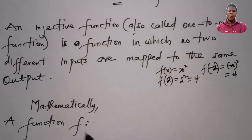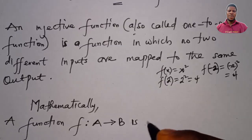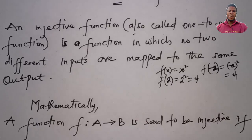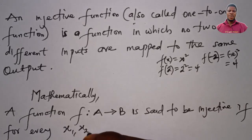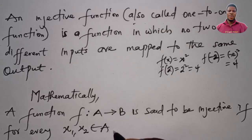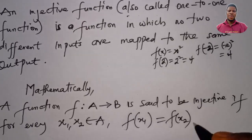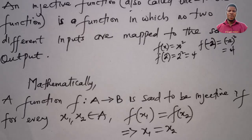Mathematically, a function f from domain A to codomain B is said to be injective if, for every x1 and x2 which are members of the domain, f(x1) = f(x2) implies that x1 = x2. This is the definition of an injective function. We'll take examples of functions that are both injective and not injective to see how to prove injectivity.